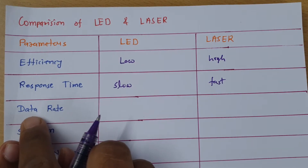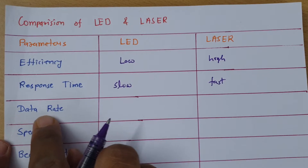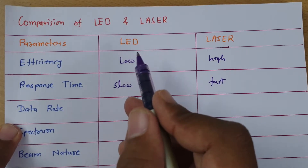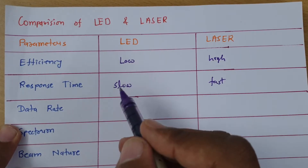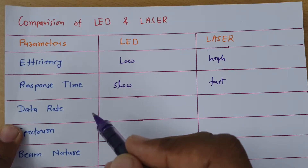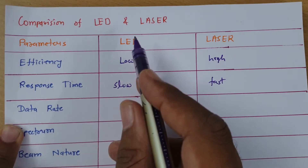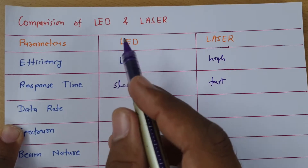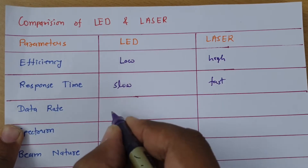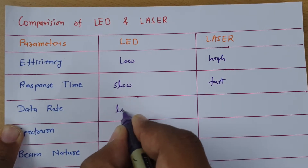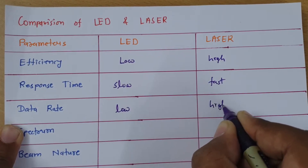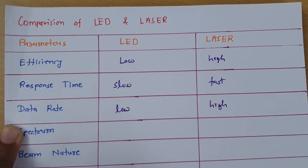The third parameter is data rate. Because of limitations in spectral width, the data rate of LED is low, while the data rate is high with laser.